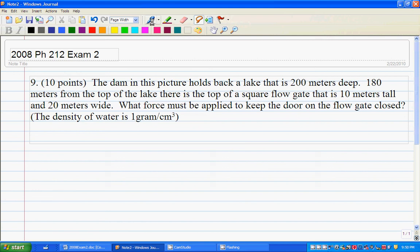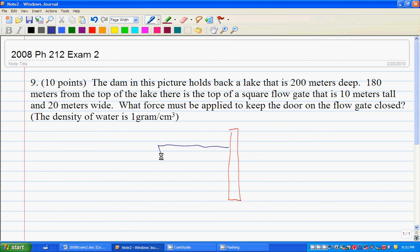So basically, we have a dam that is holding back a lake or ocean or some other body of water. And near the bottom of the dam, there is a flow gate.